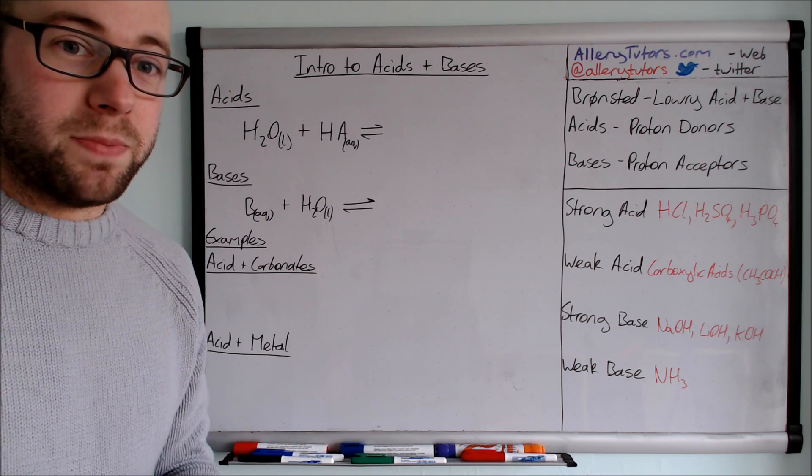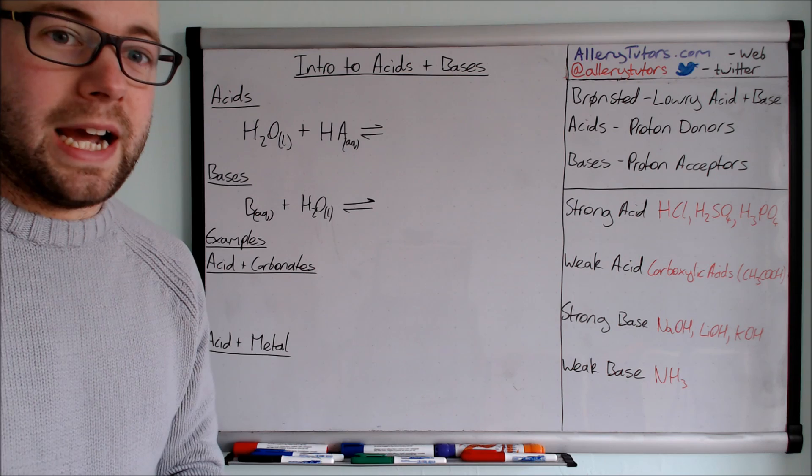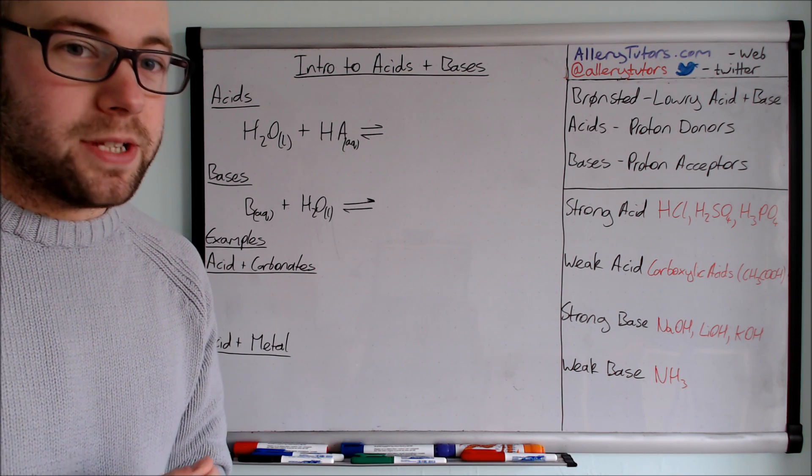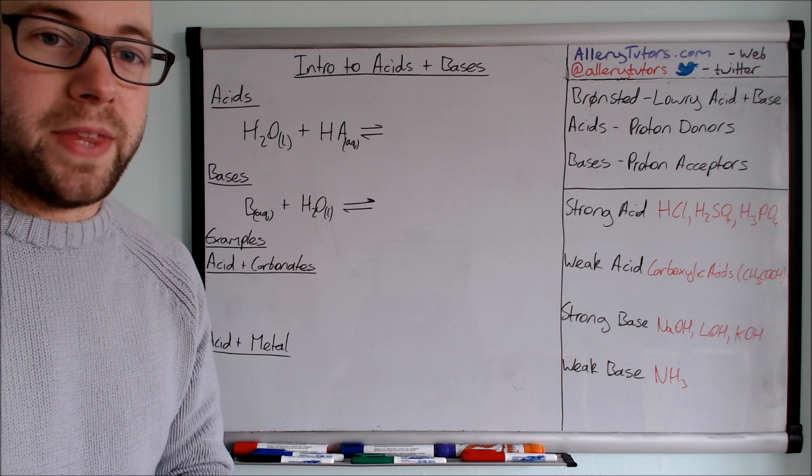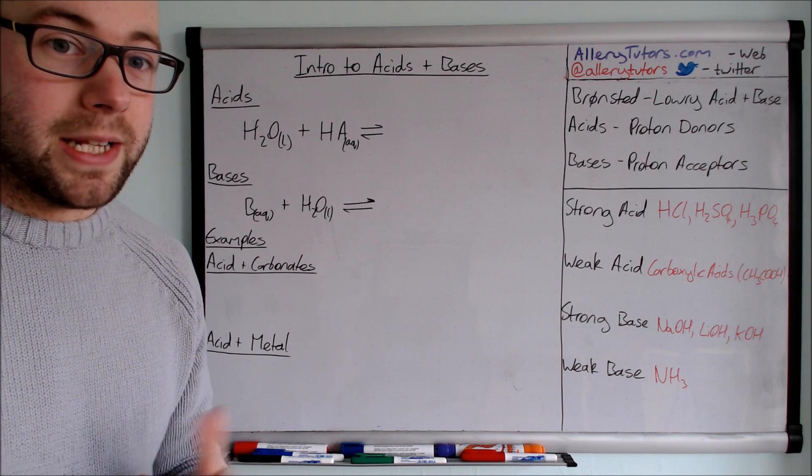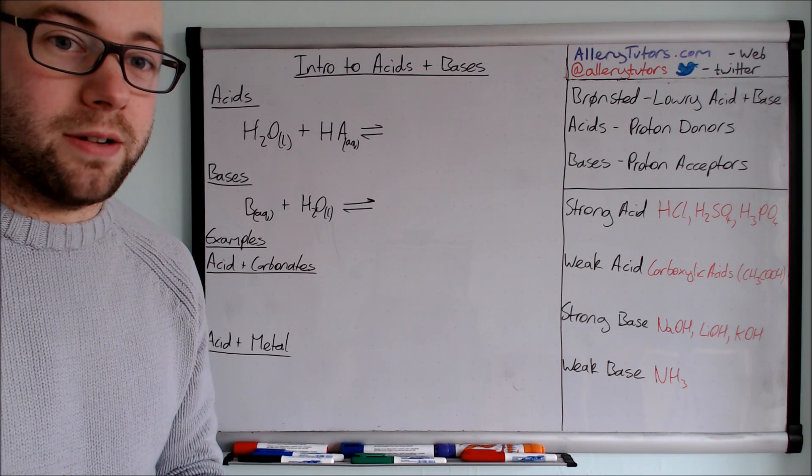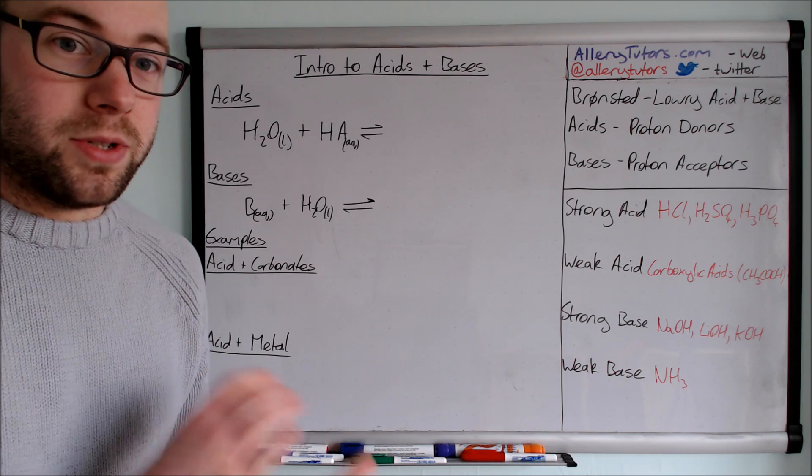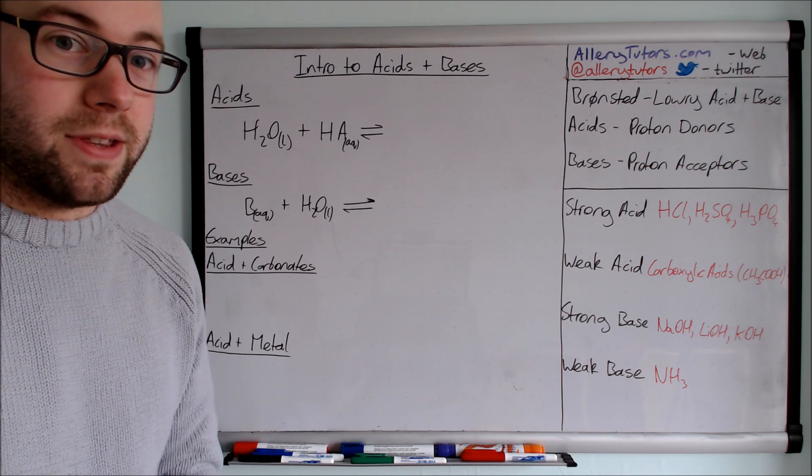Now there is another principle as well called the Lewis acid and base theory, but this is mainly linked with the explanations of transition metal complexes and how they're acidic. So that's a different theory altogether, but we're just going to stick with the Bronsted-Lowry theory for the time being.